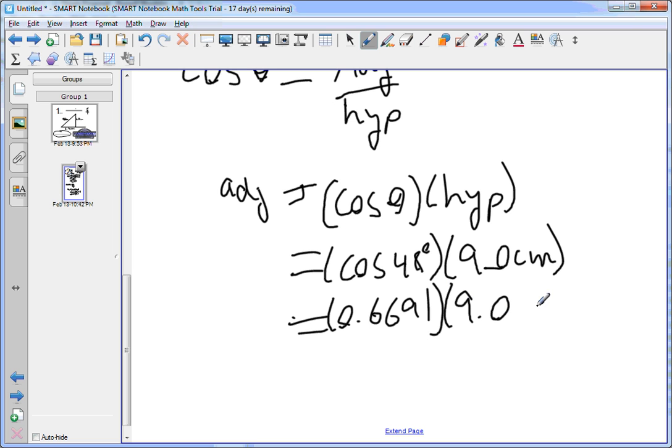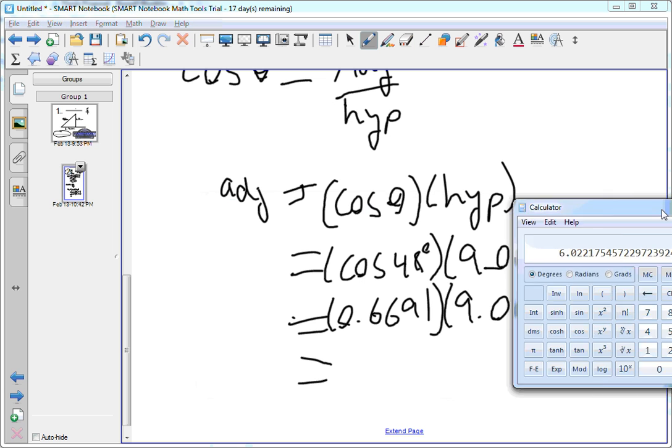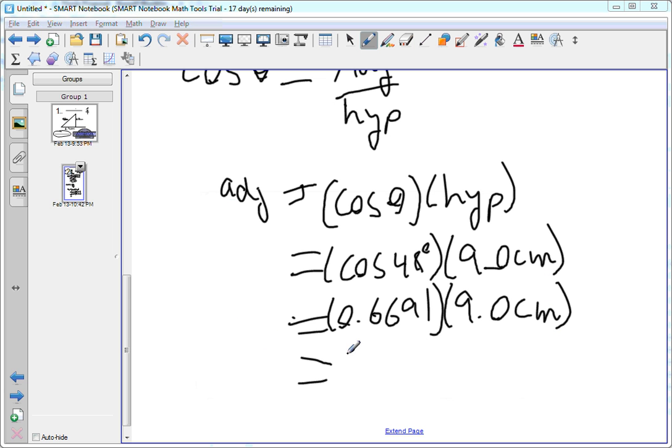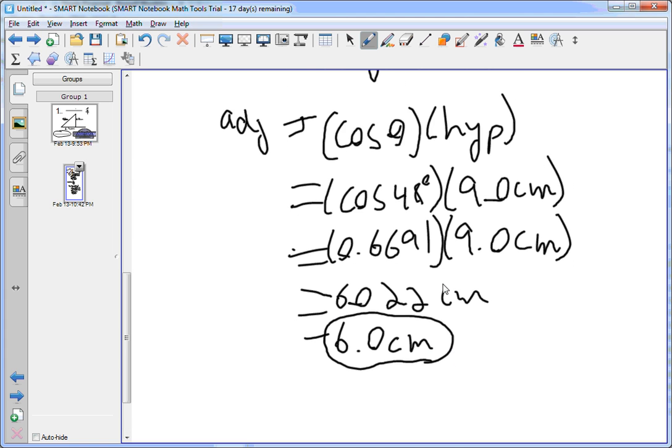Times 9.0 centimeters equals 6.022 centimeters. Again though, two significant figures, this would round to 6.0 centimeters.